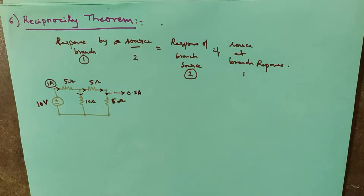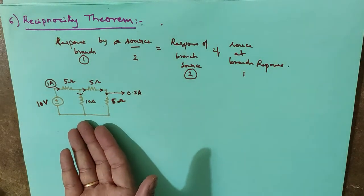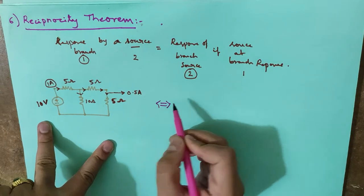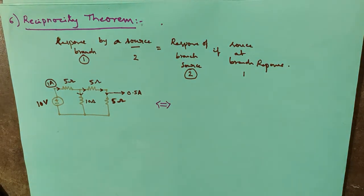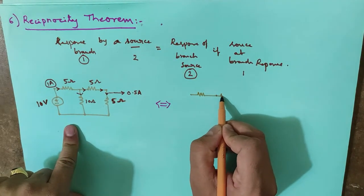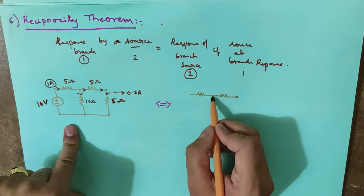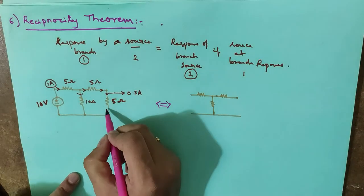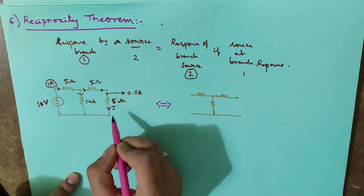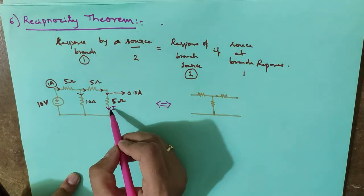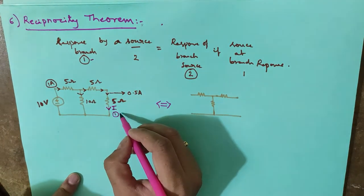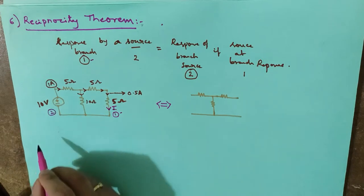We can solve the same problem using nodal analysis, mesh analysis, or directly as I have solved now. But what is the reciprocity theorem? Reciprocity theorem means we need to interchange the source and the response. I am marking the response current in pink colour — this is the current I want to measure. Let me call the response branch as branch 1, and the voltage source is in branch 2.